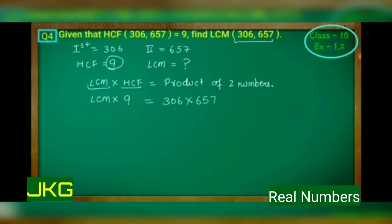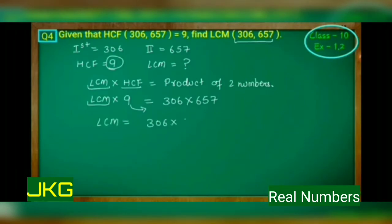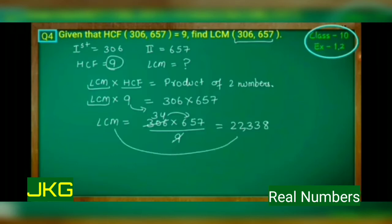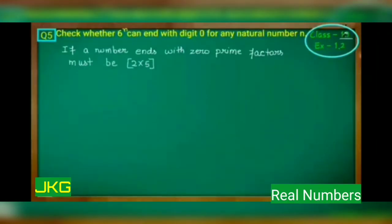You take 9 to the other side — since it is multiplying on one side, it will divide on the other. So LCM equals 306 into 657 upon 9. Both are divisible by 9, as the sum of digits of 306 gives 9. So it becomes 34 multiplied by 657, which gives 22338. So your LCM is 22338.